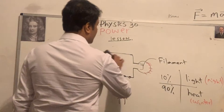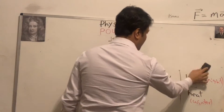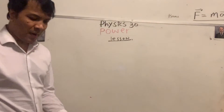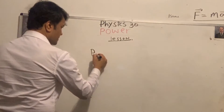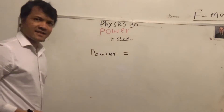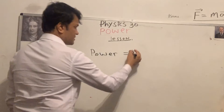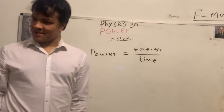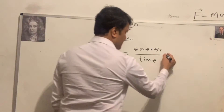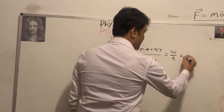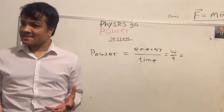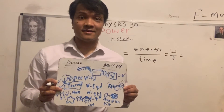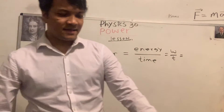Now we're going to explain this in terms of power. Power equals energy over time: P = W/t. We already know that energy is work.